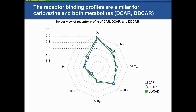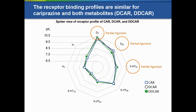The receptor binding profiles are similar for cariprazine and both metabolites. The main mechanism of action of cariprazine is believed to occur via partial agonism at dopamine D3 and D2 receptors, with a preference for D3 receptors, and also partial agonism at the serotonin 5-HT1A receptor.